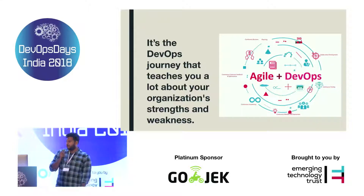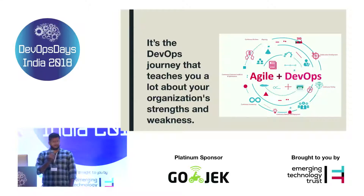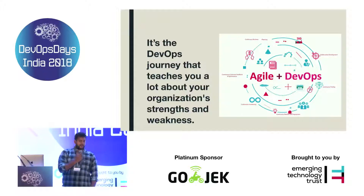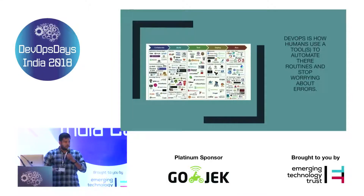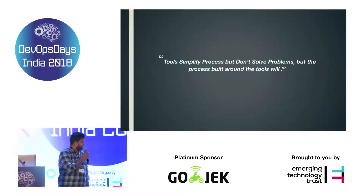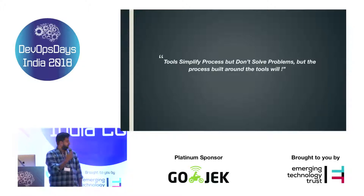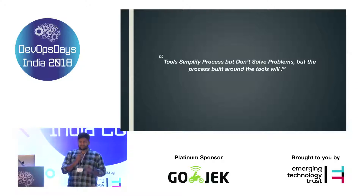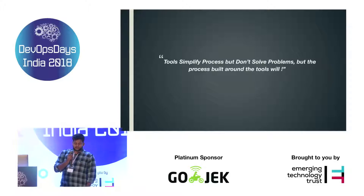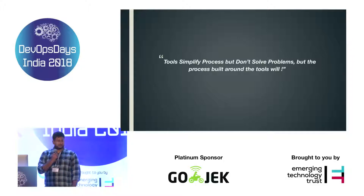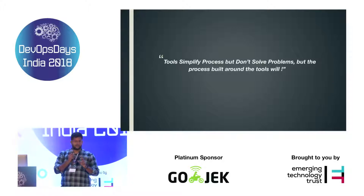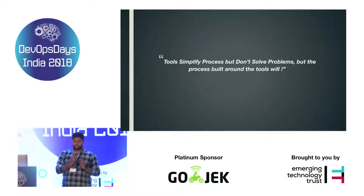Here's a quote I like: it's the DevOps journey that teaches you a lot about your organization's strengths and weaknesses. DevOps is not going to solve your problem, but the way you deal with DevOps, the way you approach it, the way you onboard tools — that will give you a lot of insights into what's happening with your system and what you can do better. Finally: tools simplify processes but don't solve problems, but the processes built around the tools will. There are thousands of tools and hundreds of methodologies, but what you really do as a DevOps team is iterate through multiple tools and try different methodologies. There is one process or one tool that really fits your requirement — that's where you need to put your time. Once you find that tool, the problem is solved.